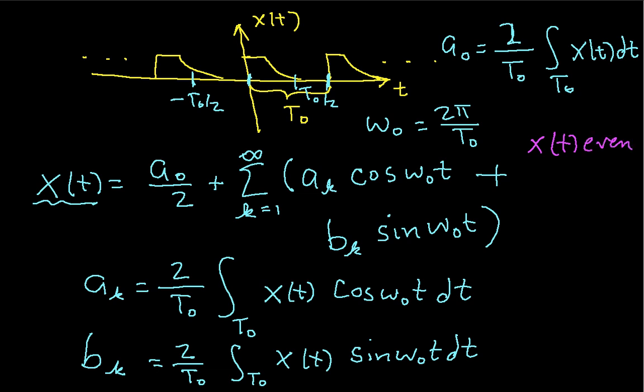then all of the b sub k's, the coefficients in front of the sines, are 0. This makes sense because cosine is an even function, and so you would expect an even x of t to be composed of even sinusoidal things.